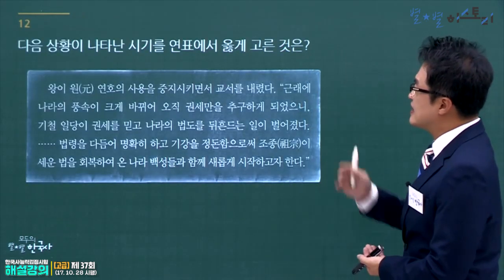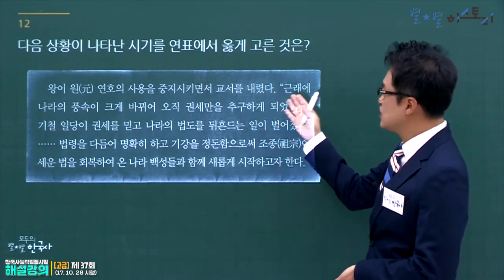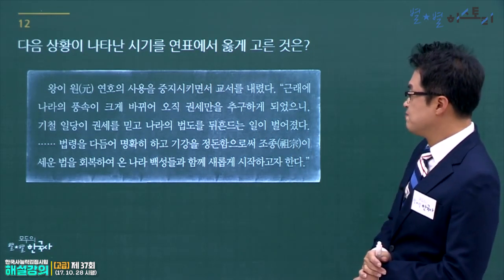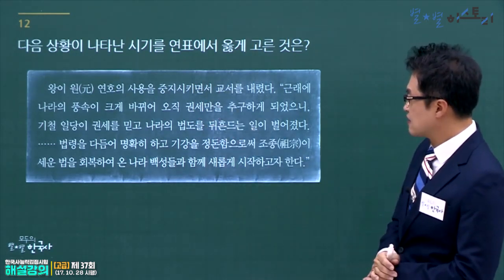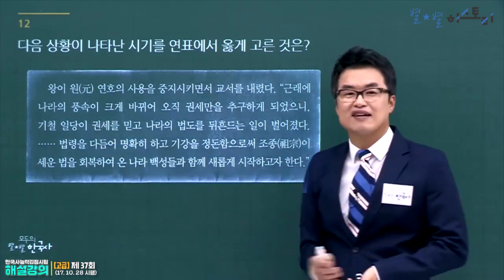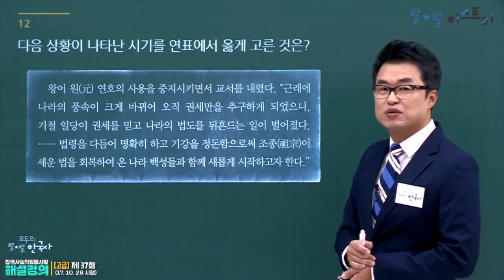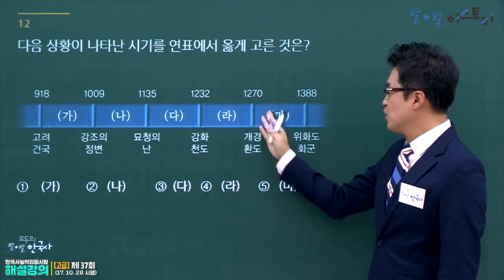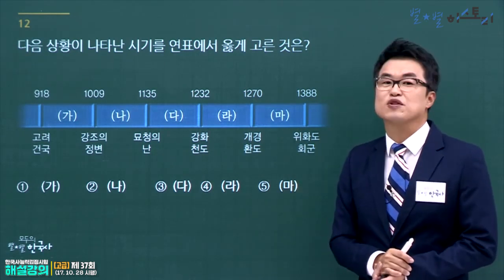원의 연호 사용을 중지시키고 기철을 숙청한 왕은 고려 공민왕입니다. 이것은 반원 자주 정책입니다. 공민왕 시기를 연표에서 고릅니다. 몽골과의 싸움에서 진 이후 원 간섭기가 이어지고, 공민왕이 이 체제를 무너뜨리려 했으므로 원 간섭기 이후 시기를 고르면 됩니다. 정답은 5번입니다.